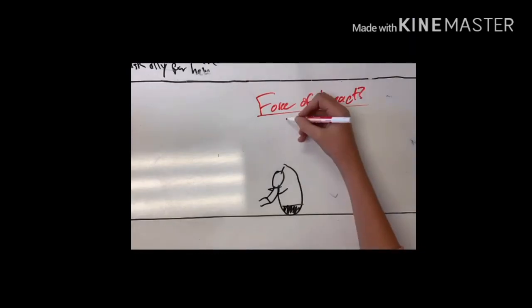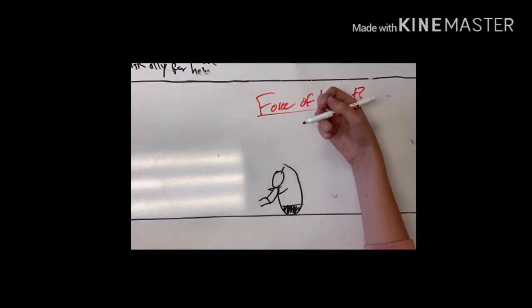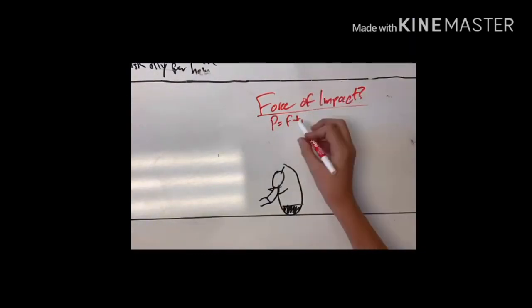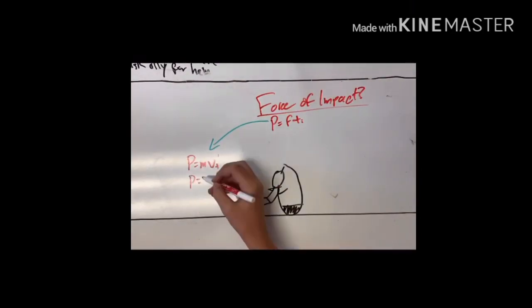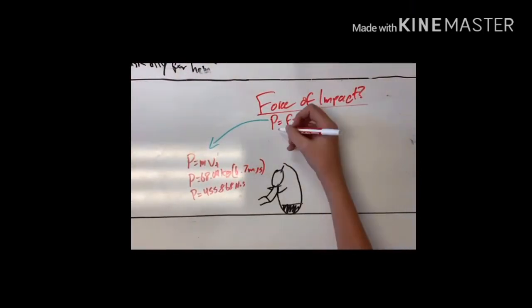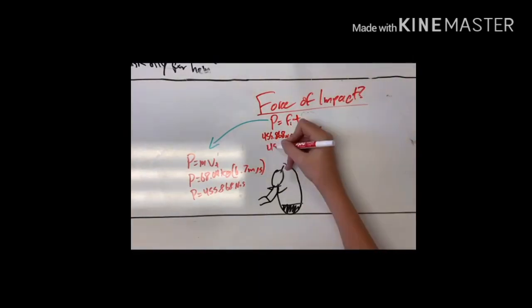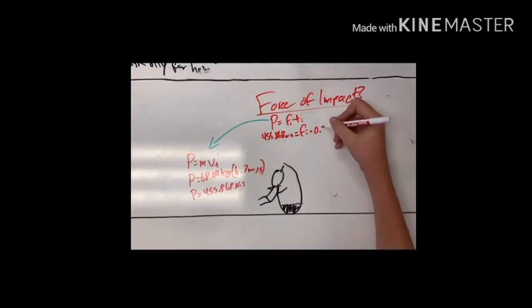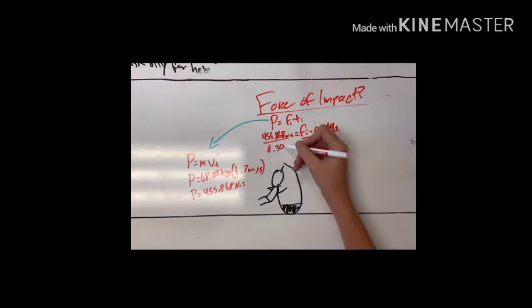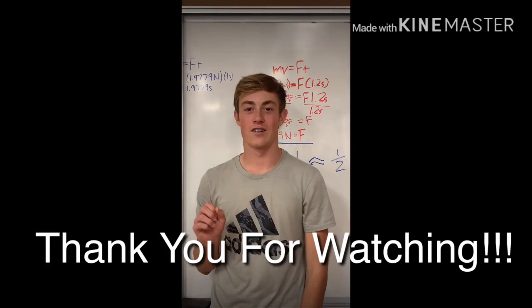Now's the moment you've all been waiting for — how hard is Ben hitting the dummy? After substituting answers from previous problems, we found that our linebacker was hitting the quarterback with a force of roughly 1,500 newtons, which is about the force required to break a 1.5-inch-thick concrete slab with your fist. Thank you.